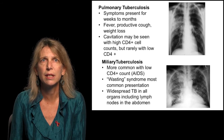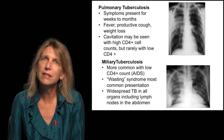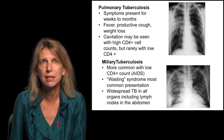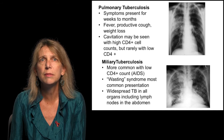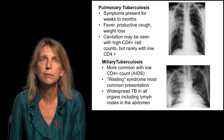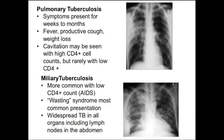In pulmonary tuberculosis, symptoms are present for weeks to months. This is in contrast to bacterial pneumonias, also common in patients with HIV, where symptoms are present for days. Patients with pulmonary tuberculosis present with fever, productive cough, and weight loss. Cavitation may be seen and is often found in patients with high CD4 cell counts, but rarely in those with low CD4 cell counts.